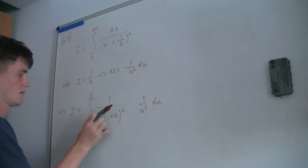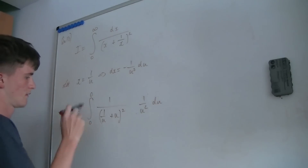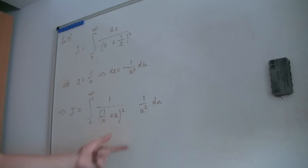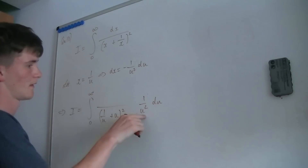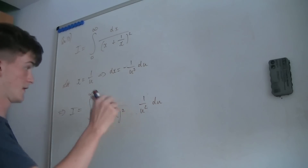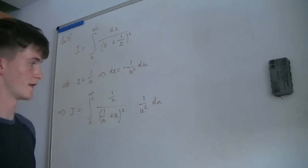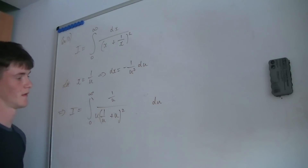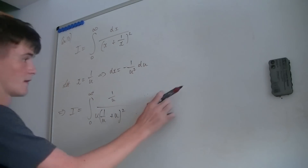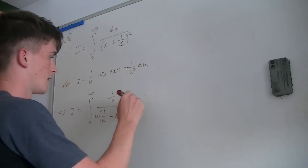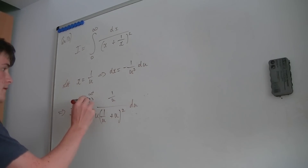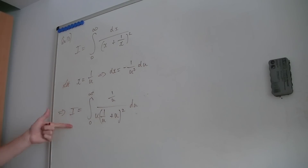The minus 1 here can be used to flip the bounds of this integral. Now I'm going to split this up — putting 1 over u in the numerator and another u in the denominator, because that's equivalent.